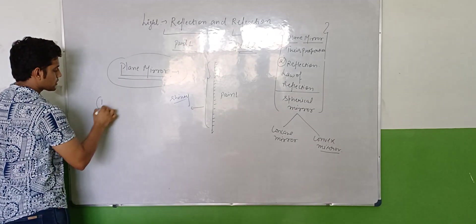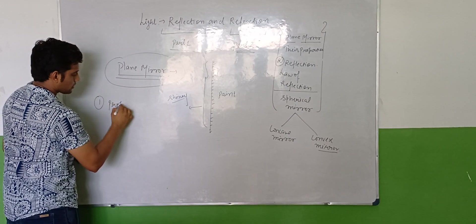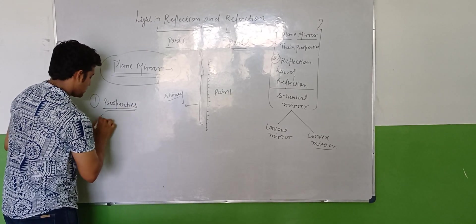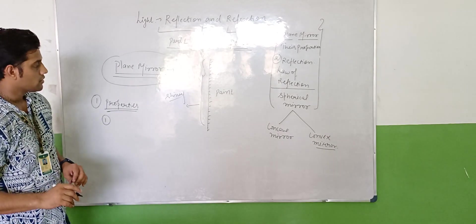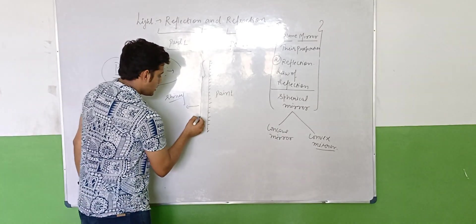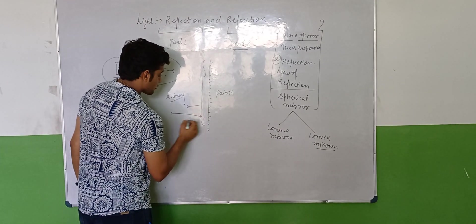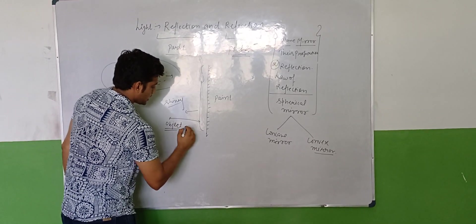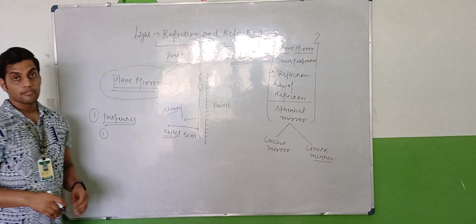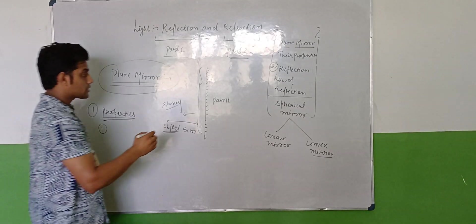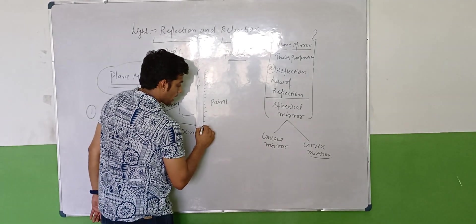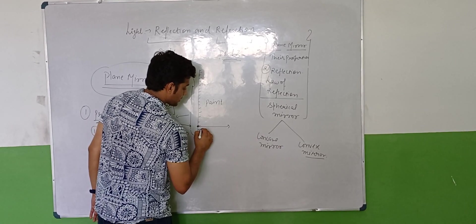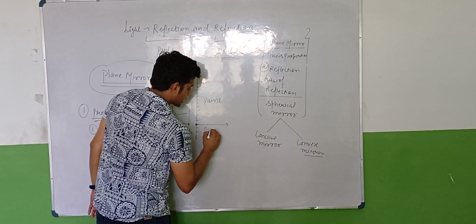Plane Mirror's properties are... Main properties of the Plane Mirror is: When the distance of object in front of mirror is 5 cm, then where does its image form? The image forms behind the mirror, the same distance as the object.